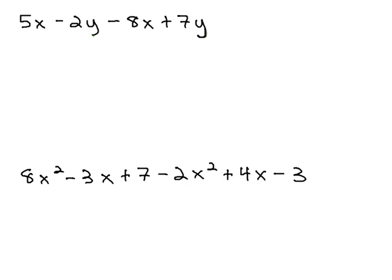Like terms are terms that the variables and exponents on the variables match identically. In other words, when we have 5x, to look for a like term would be to look for another term with x on it. That would be the negative 8x.